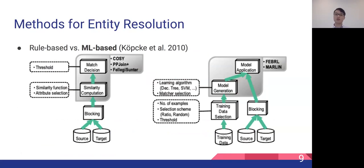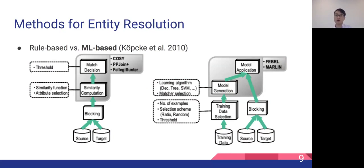In literature, there are two major strands of models for entity resolution. One is rule-based systems, and the other is learning-based models. In rule-based systems, we define similarity functions between strings to make matching decisions. On the other hand, learning-based methods train statistical models on training data, such as SVM and decision trees, and apply them to evaluation data.